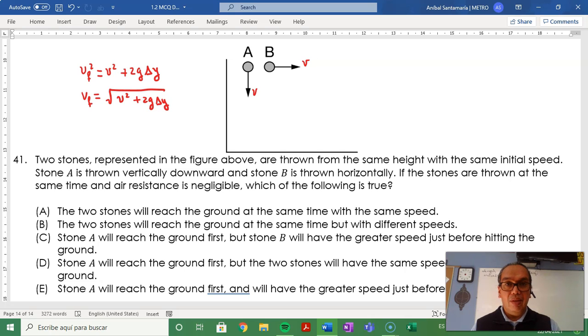On the other hand, the other ball, the other stone, has a velocity that has two components. A component in the x direction that is v₀ and a component in the y direction given by the final velocity squared is equal to 0 squared plus 2g delta y.